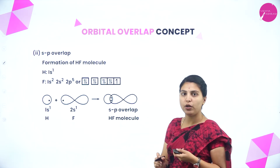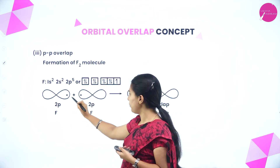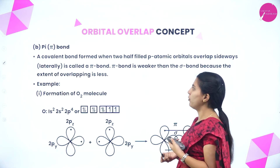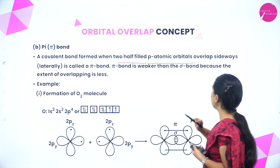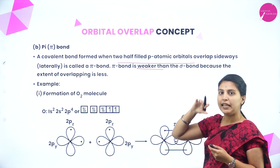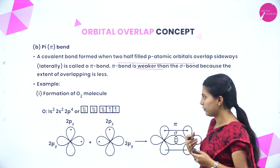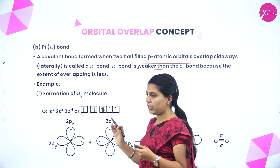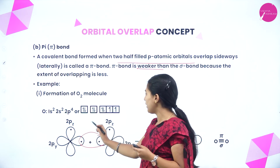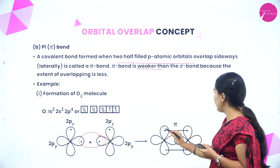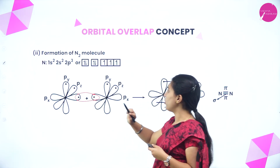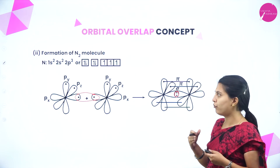In HF there is sp overlap and in Cl₂ there is pp overlap where both dumbbell-shaped orbitals overlap end-to-end — this is also a sigma bond with maximum overlap. A pi bond is formed when two half-filled p orbitals overlap sideways or laterally. Pi bond is weaker than sigma bond because the extent of overlap is less. In O₂, one bond is a sigma bond from end-to-end overlap while the p orbital forms a pi bond through lateral overlap. In N₂, one sigma bond and two pi bonds are present.